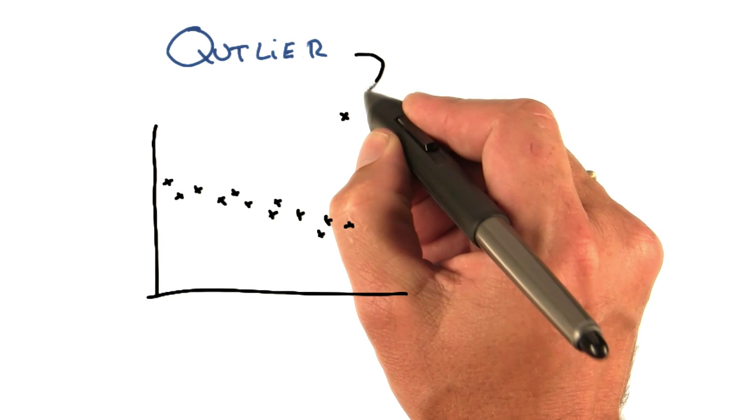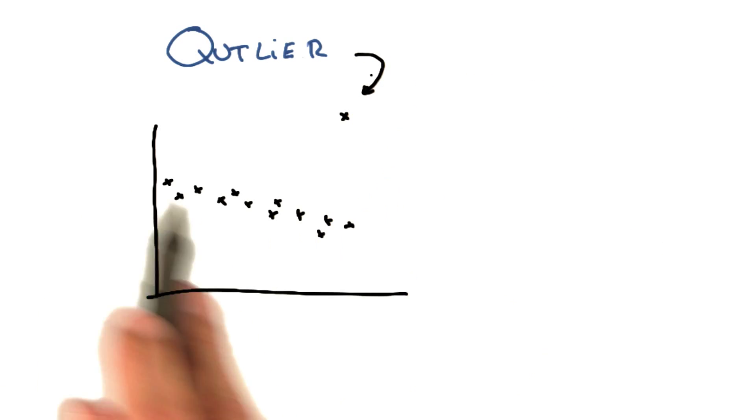Either way, this thing is called an outlier because it lays way outside the other data. I'm going to give you a little quiz here. If we did linear regression, and I give you three hypotheses for what the best linear regression is, which one do you think is the best of the three?